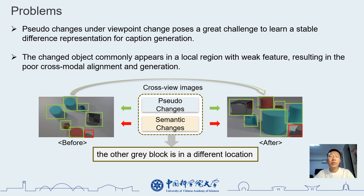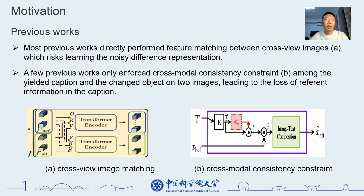However, there are two major problems. First, pseudo-changes under viewpoint changes pose a great challenge to learning a stable difference representation. Second, the changed object commonly appears in a local region with a weak feature, resulting in poor cross-modal alignment and generation. Most previous works try to directly perform feature matching between cross-view images, which risks learning a noisy difference representation. A few previous works try to enforce a cross-modal consistency constraint only among the caption and the changed object in images, leading to the loss of reference information in the caption.